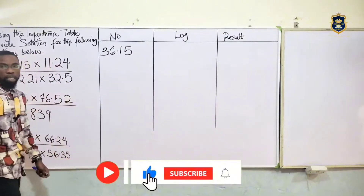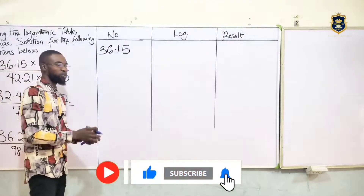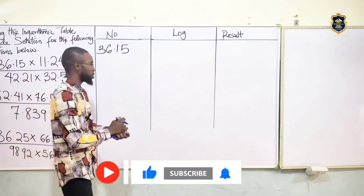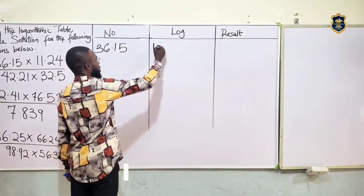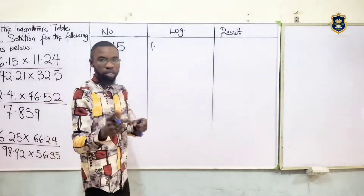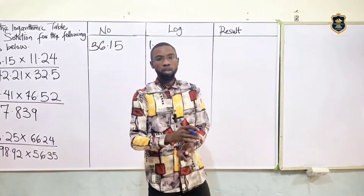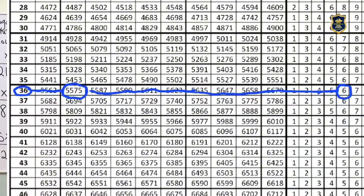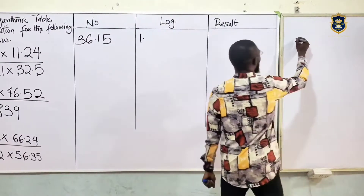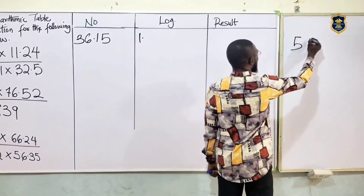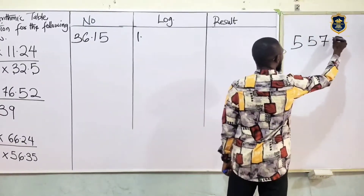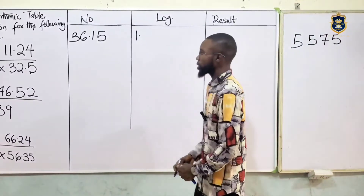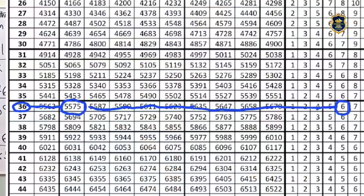First of all, we look for the characteristics, which becomes 1. And if you check — look at the screen — you'll see the logarithms table on your screen. Check for 36 under 1. If you check, you discover we've got 5575.